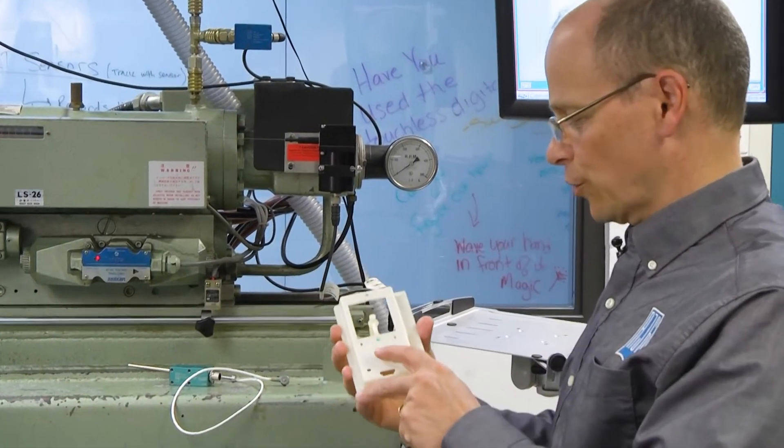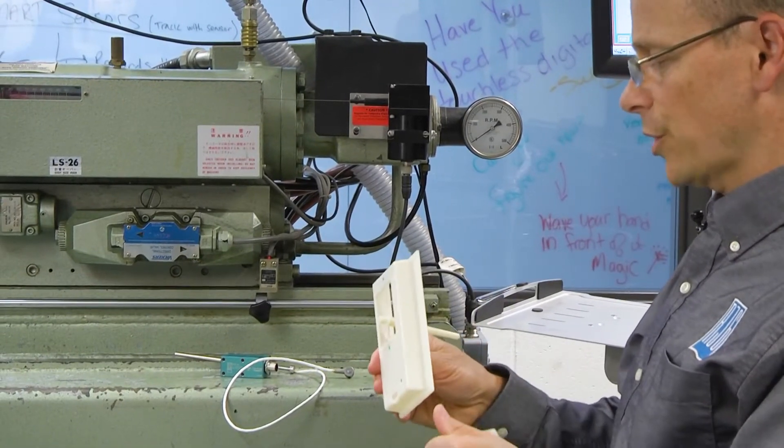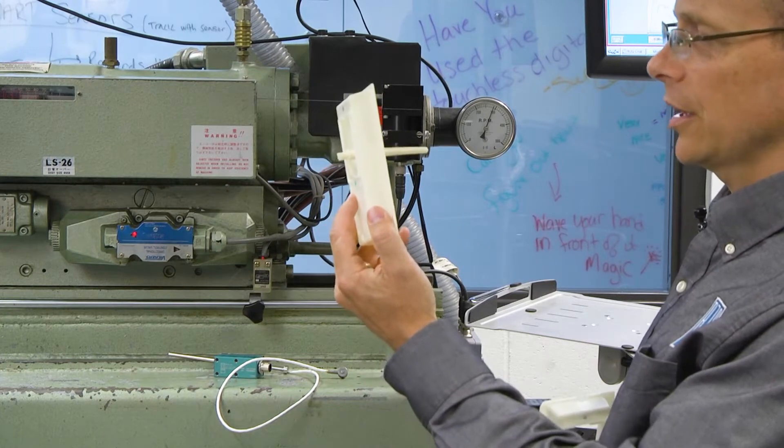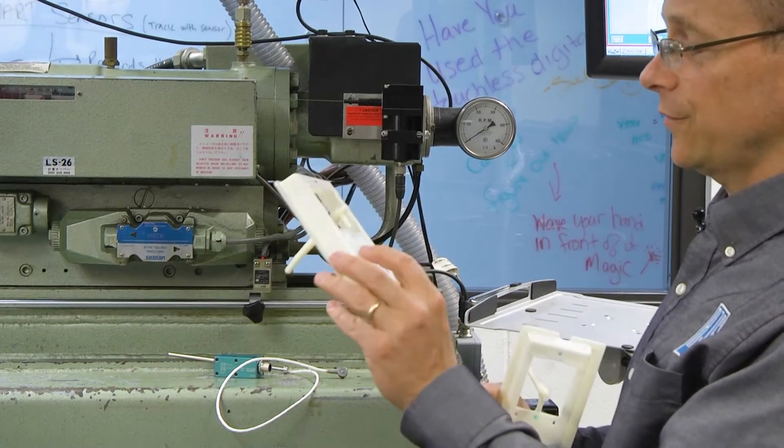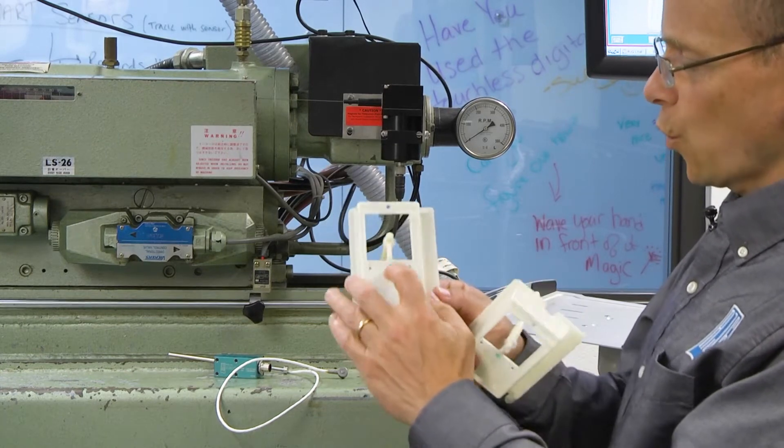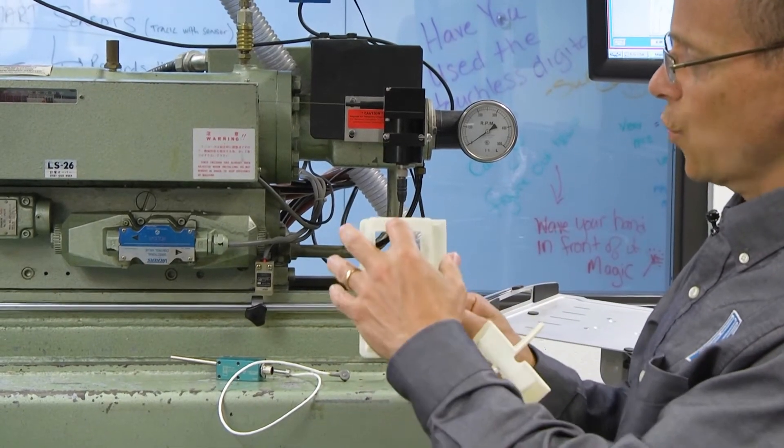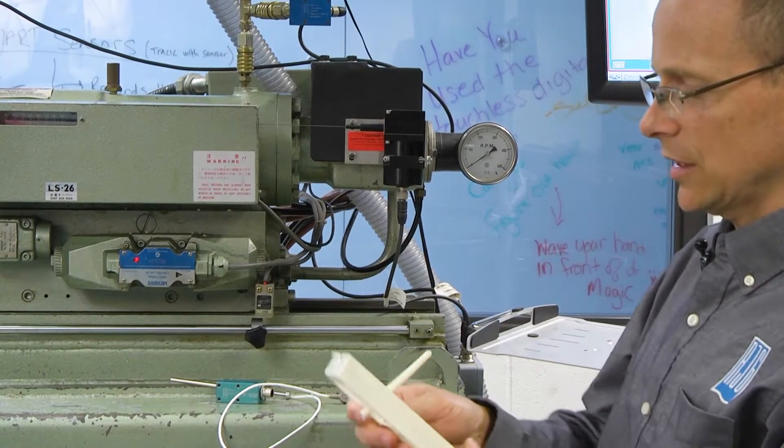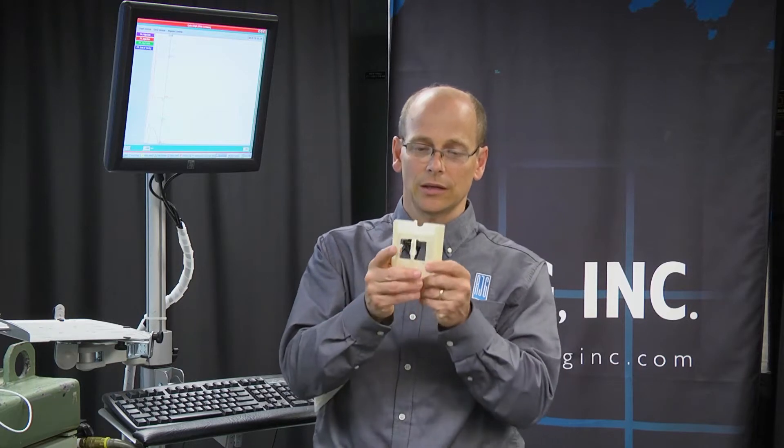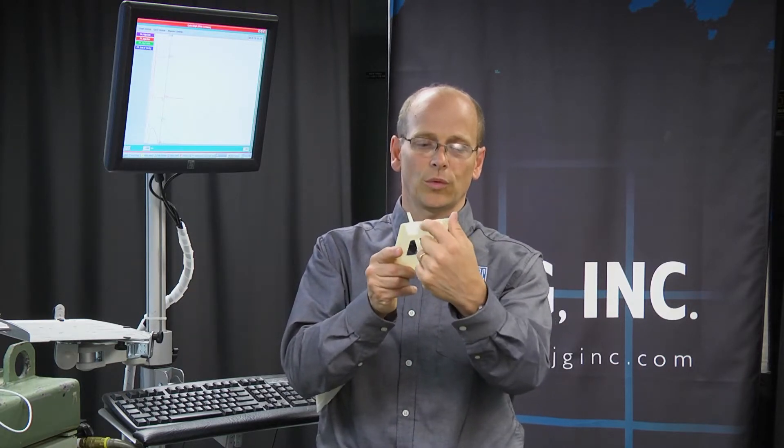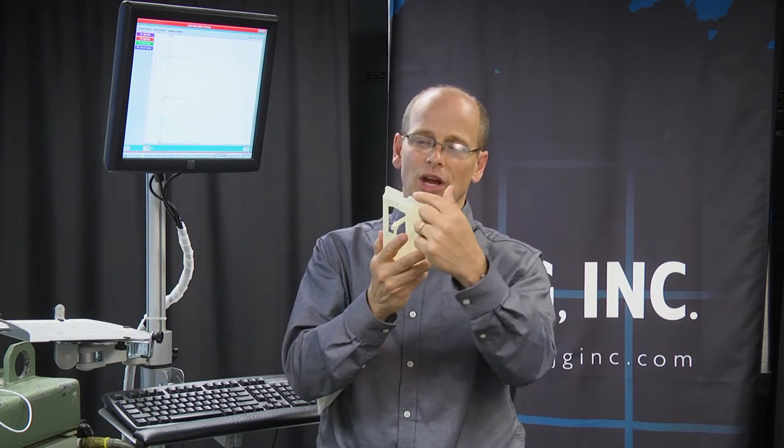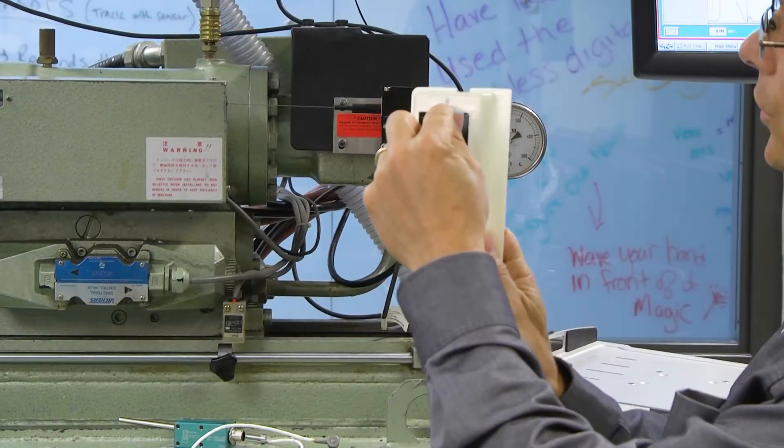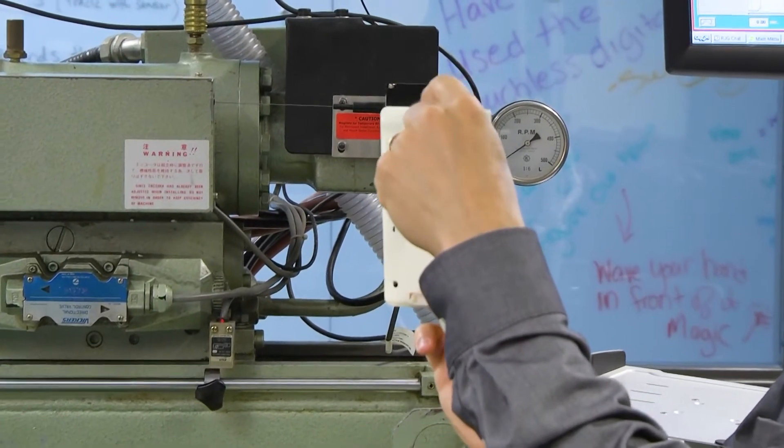The part we're molding today is a fairly simple part. It is a single cavity, cold runner part. We have two sensors located inside of this mold, one near the gate and one near the end of cavity. We know that location is near the end of cavity because we've made a fill only part where we can see the last point of fill, the short shot. And the sensor is located as close as we can get to that last point of fill.